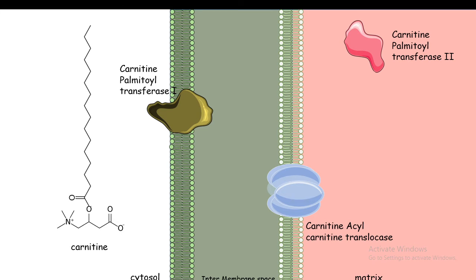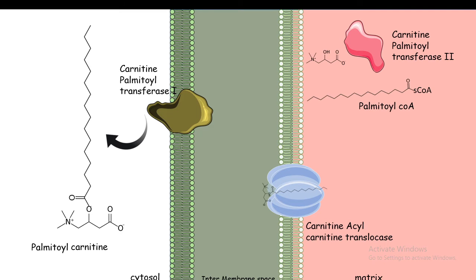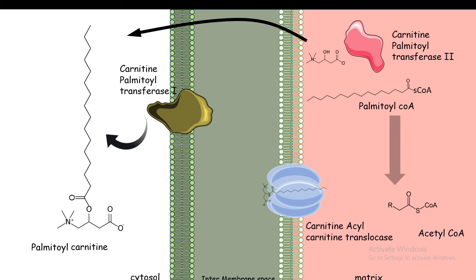This adduct is transported by carnitine palmitoyl transferase 1, commonly known as CPT1, present in the outer mitochondrial membrane. Using a carnitine acyl translocase channel, the palmitoyl carnitine gets inside the mitochondrial matrix. With the help of carnitine palmitoyl transferase 2, palmitoyl CoA is released and the carnitine molecule is recycled back to the cytosol. The palmitoyl CoA now inside the mitochondrial matrix is the starting material for the beta oxidation process.